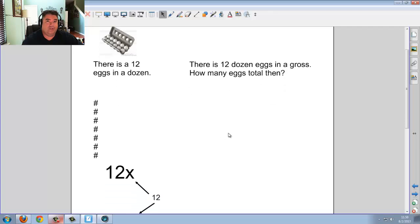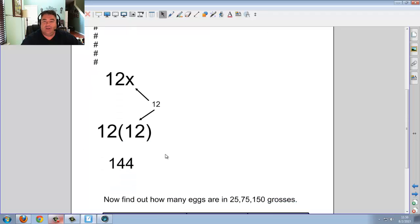How'd you do? Take a look. The x was 12. Now why was it 12? Because there's 12 eggs in a dozen. So the x could be 12. Then there's 12 dozen eggs. 12, 12. And hopefully you got 144.